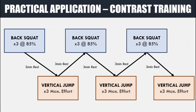Now we can explore how to practically apply post activation potentiation into training. Probably the best method is what we term contrast training — using movements with contrasting velocities in an alternating fashion. Taking the back squat and vertical jump example, we may do a set of three repetitions in the back squat at 85% followed by three maximal effort vertical jumps, with three minutes of rest between them. This is repeated for three sets of each exercise with three minutes of rest between each set, giving us three sets of three back squats at 85% and three sets of three max effort vertical jumps. Following this protocol should allow the sets of vertical jumps to be of very high quality.